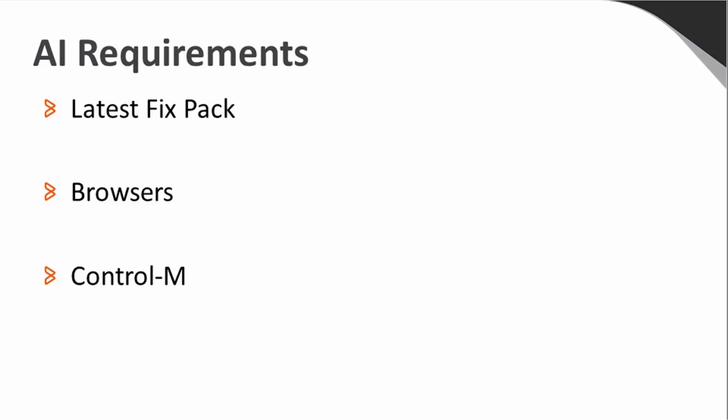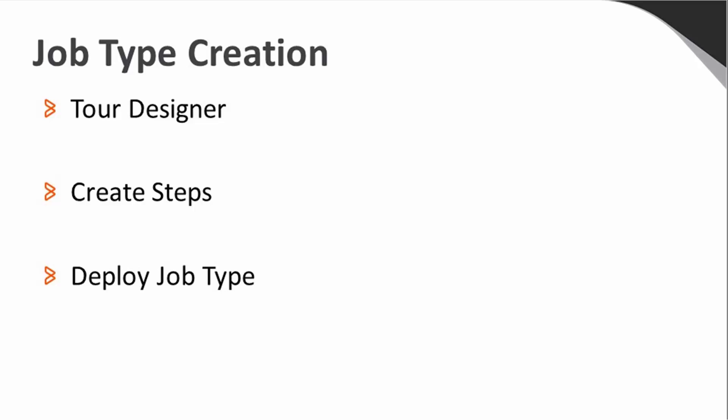Let's go to an overview of what we're going to do in our demo. We're going to take a tour of the AI designer, check out some steps that have already been created, and even create a step to show you how easy it is to create your own job type. We're going to deploy this job type, then go to the GUI and look at the job form to make sure everything we've created is the way we wanted it. We're going to create a job type using the command line interface called DBU Hot Backup.